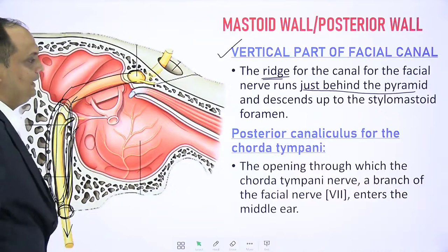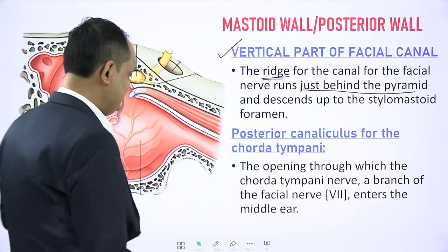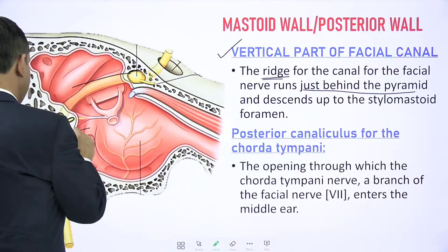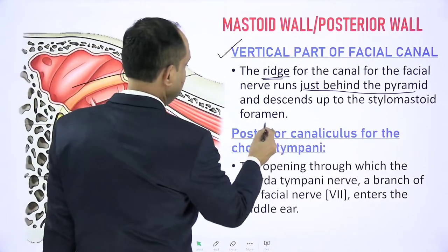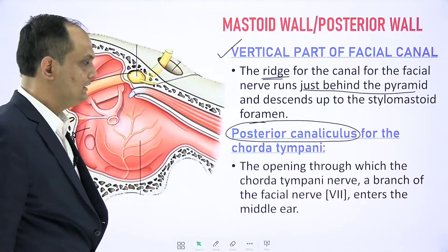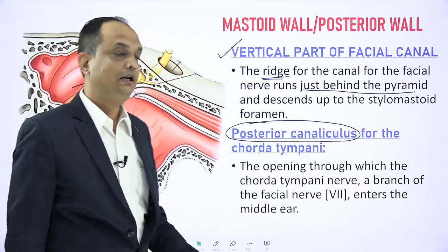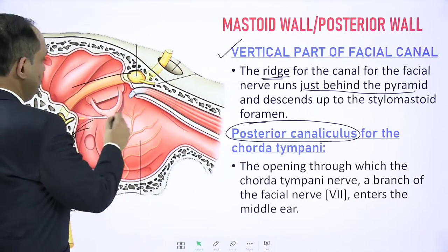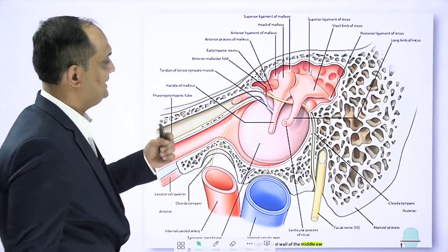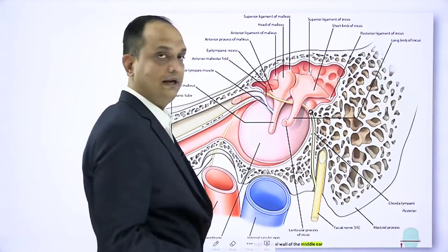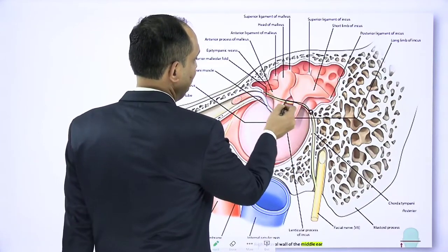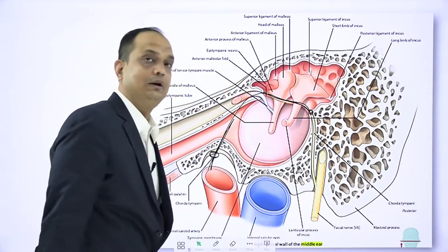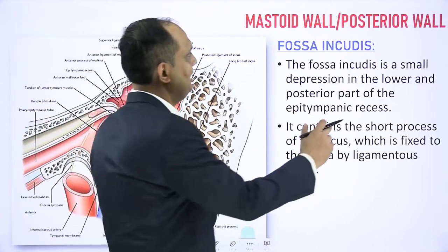The vertical part of the facial canal gives rise to the chorda tympani nerve. When the chorda tympani arises from the posterior side and enters the middle ear, it makes a small aperture called the posterior canaliculus. So the posterior canaliculus is an opening in the posterior wall of the middle ear through which the chorda tympani enters. After entering, it runs on the inner side of the tympanic membrane, then leaves the middle ear through the anterior canaliculus and exits through the petrotympanic fissure.